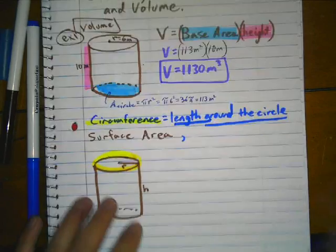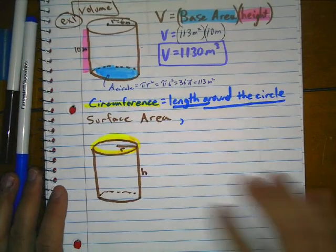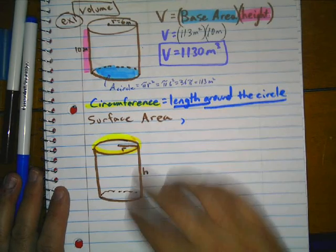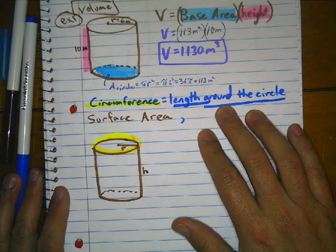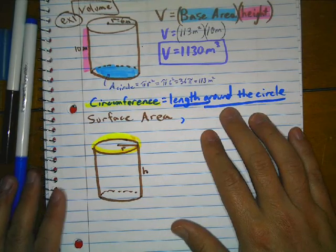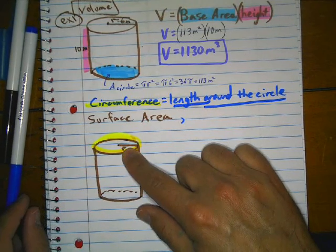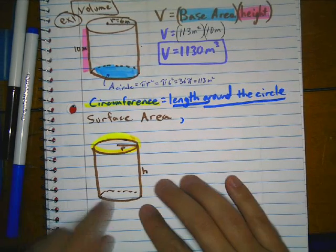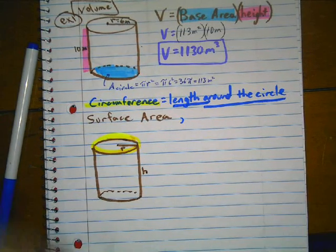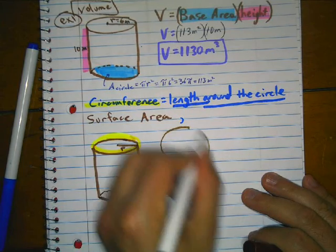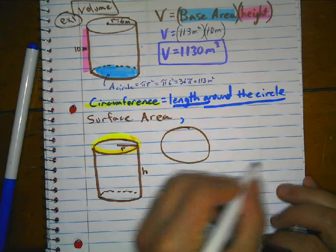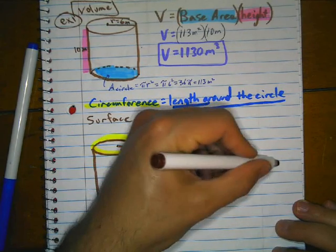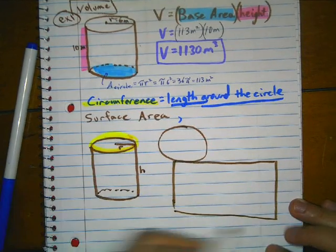Now let's talk about surface area. To find the surface area, we're also going to need to use circumference — the length around the circle. If I had a can and took the top off, I'd have a circle on top, the side of the can, and another circle on the bottom.